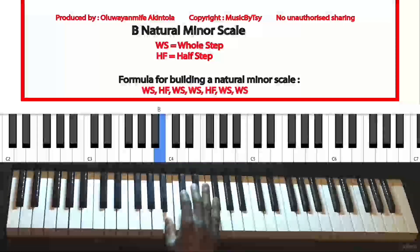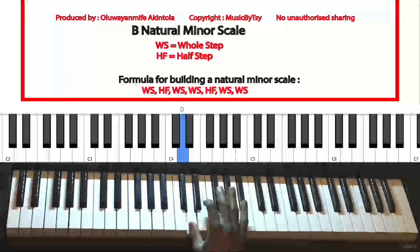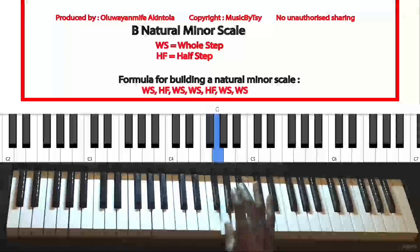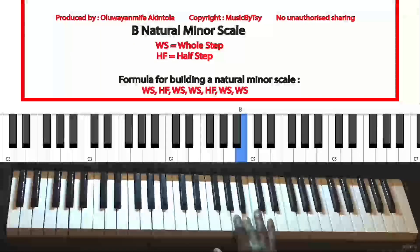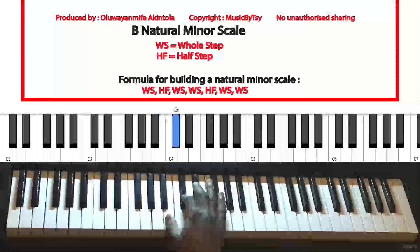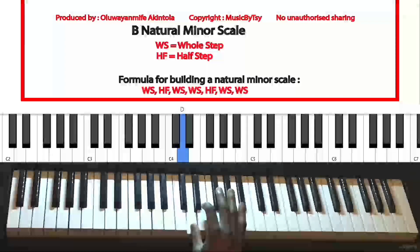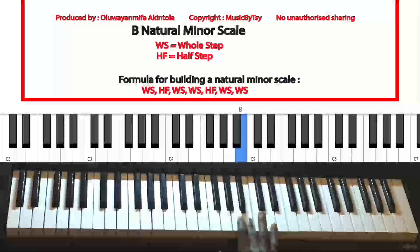Let's construct the B natural minor scale using the formula. Starting from the key of B, the formula goes: whole step, half step, whole step, whole step, half step, whole step, whole step. We get the same answer as with the first method — that is the B natural minor scale.